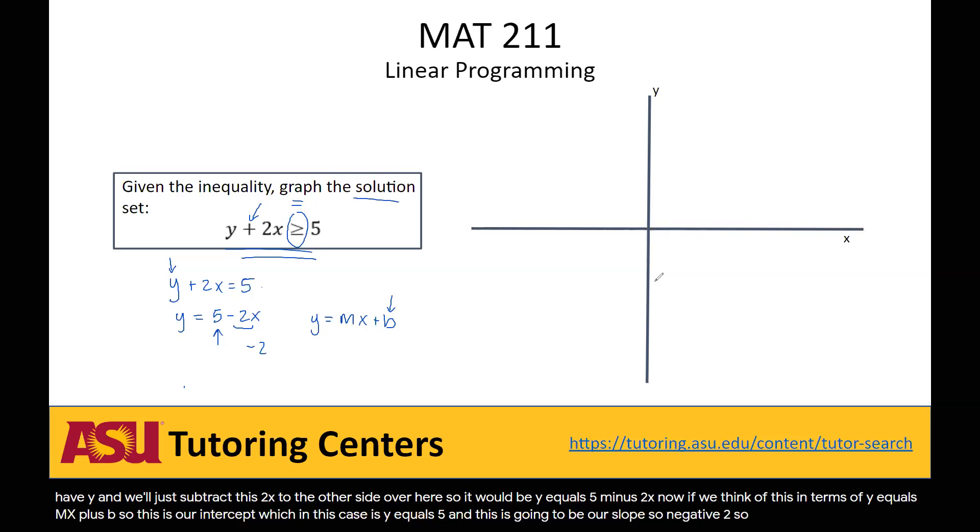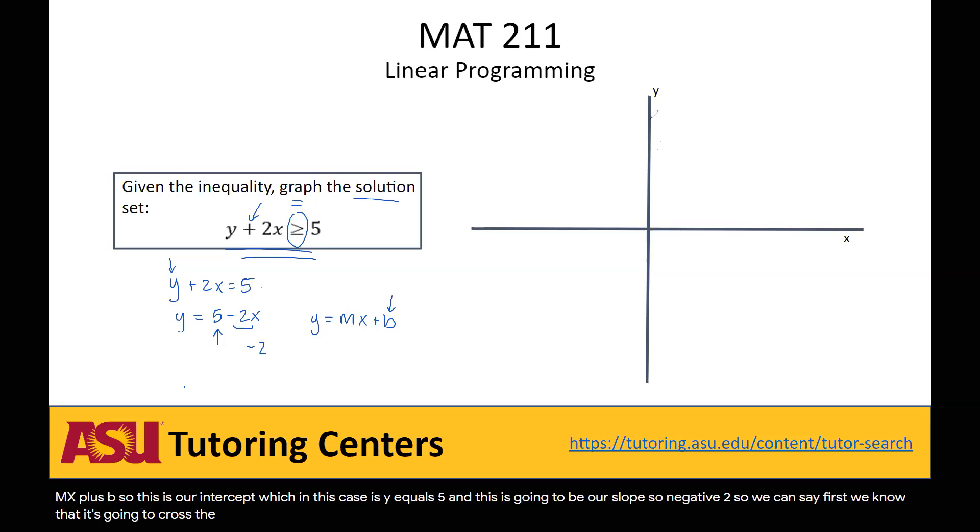We know that it's going to cross the y-axis at 5. So if we just make some little tick marks up here, so that's 1, 2, 3, 4, 5. So we know it's going to intersect here.